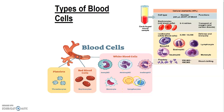The five types are basophil, eosinophil, neutrophil, lymphocytes, and monocytes. If you talk about WBC, they are big in size. They are round or irregular in shape, and they have a prominent nucleus. You can also see cytoplasm in them. They are colorless and without hemoglobin.